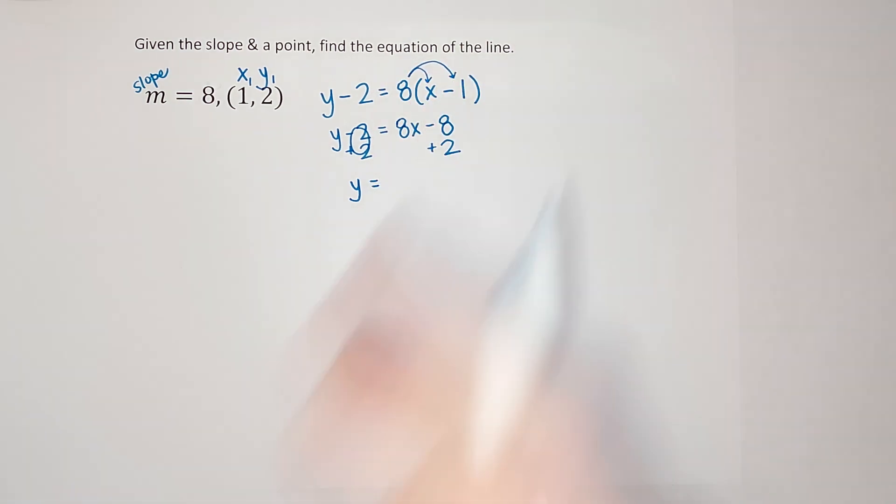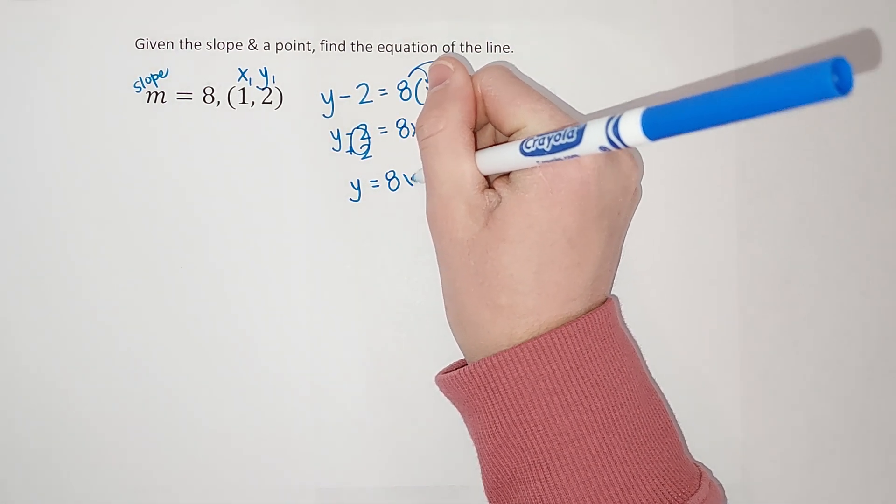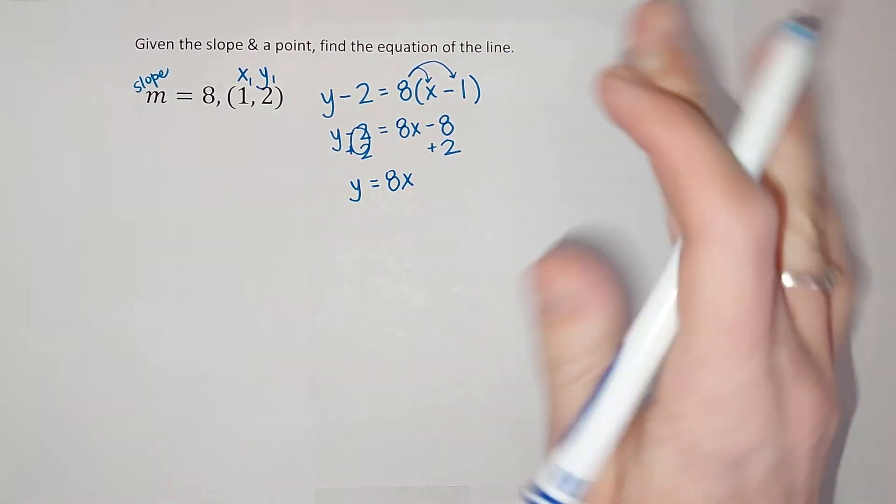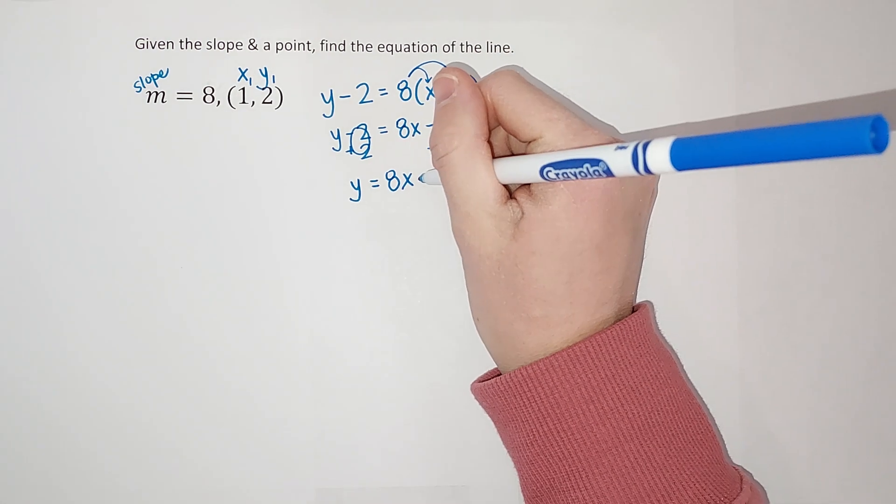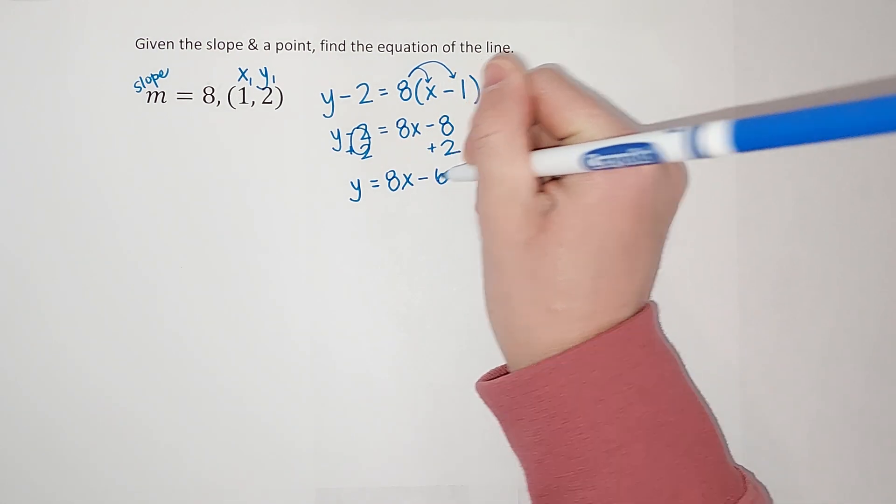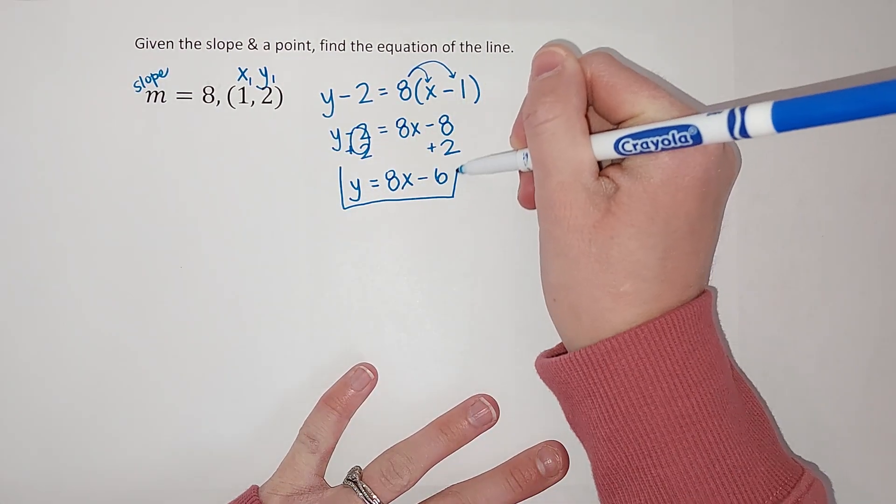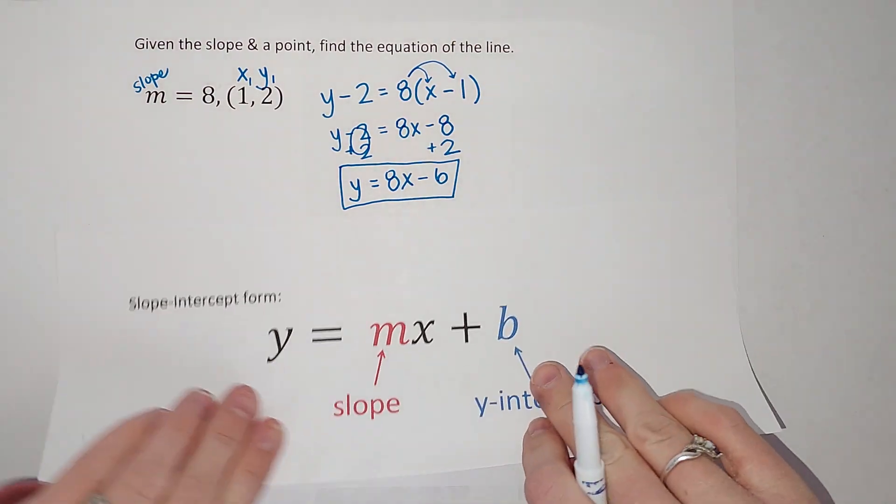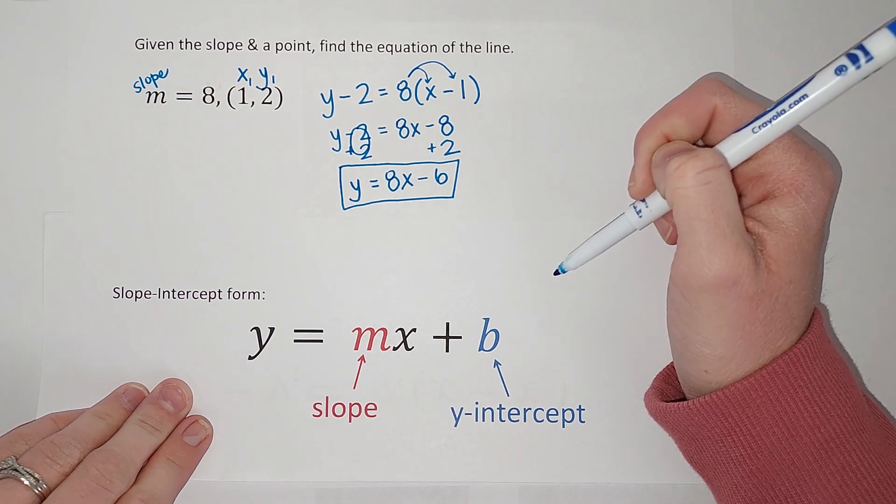So we have Y equals 8X negative 8 plus 2. This is like I owe you $8 and I'm like, I don't have it all, but I have $2 I can give you right now. So how much do I still owe you? I still owe you $6, so negative 6. That is our equation. See how it is now in slope-intercept form. That is my slope. That is my Y-intercept.